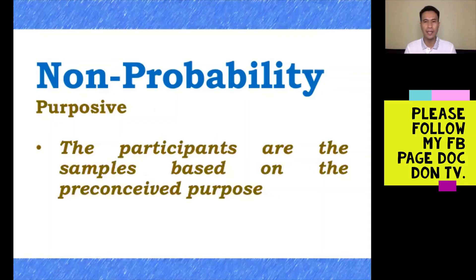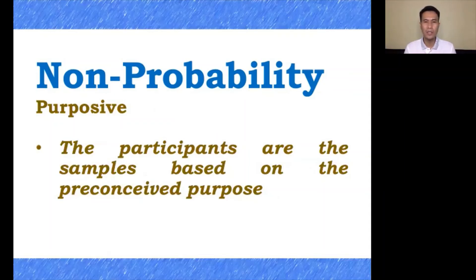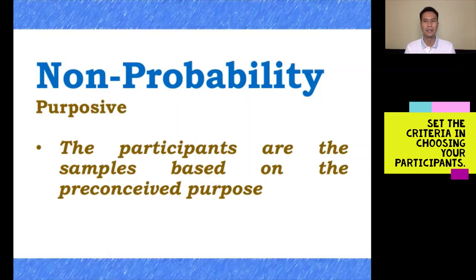Next is purposive sampling, another type of non-probability sampling often used for qualitative research. Here, participants are selected based on a preconceived purpose. It is also called judgment or selective sampling because it relies on the judgment of the researcher. You must create criteria for choosing your participants to avoid bias and to choose the right sample, ensuring you gather the data you need.